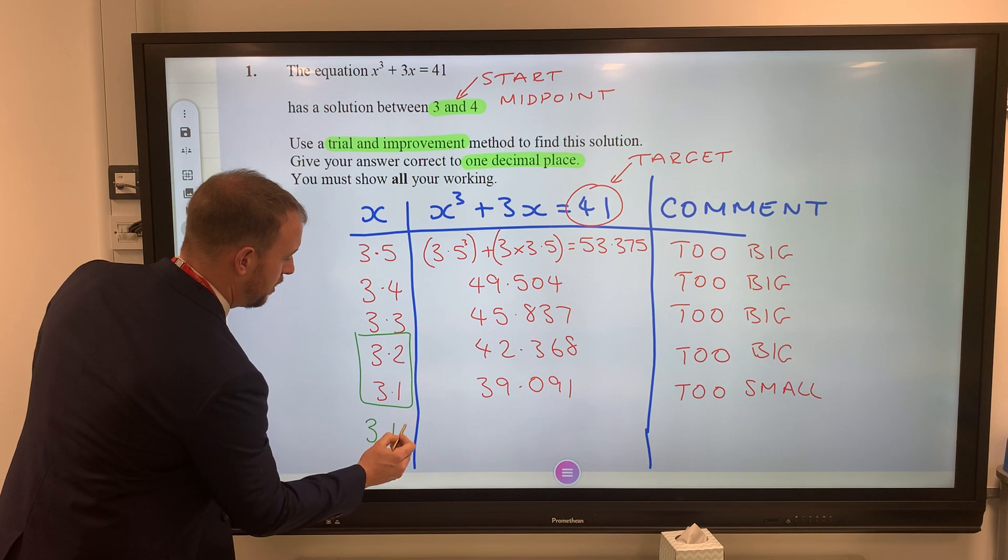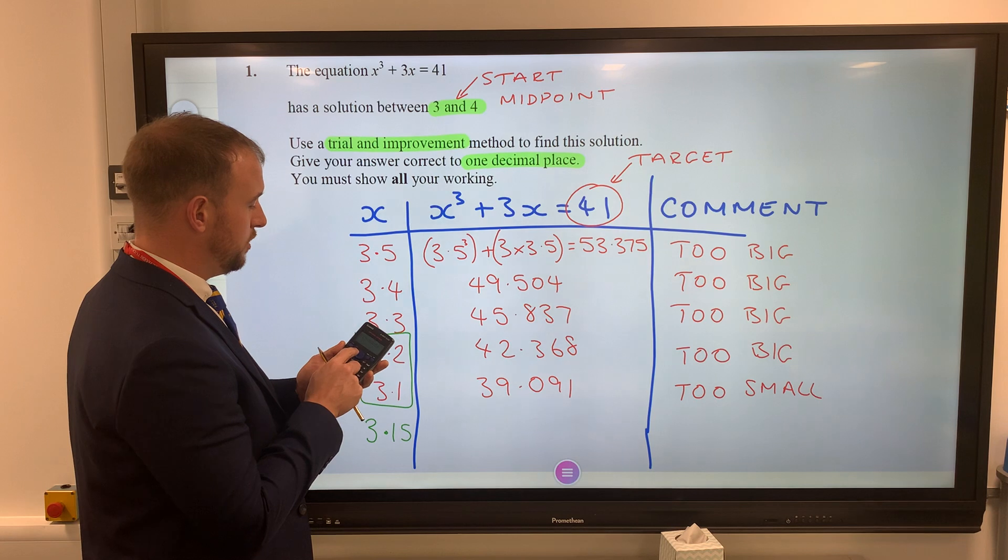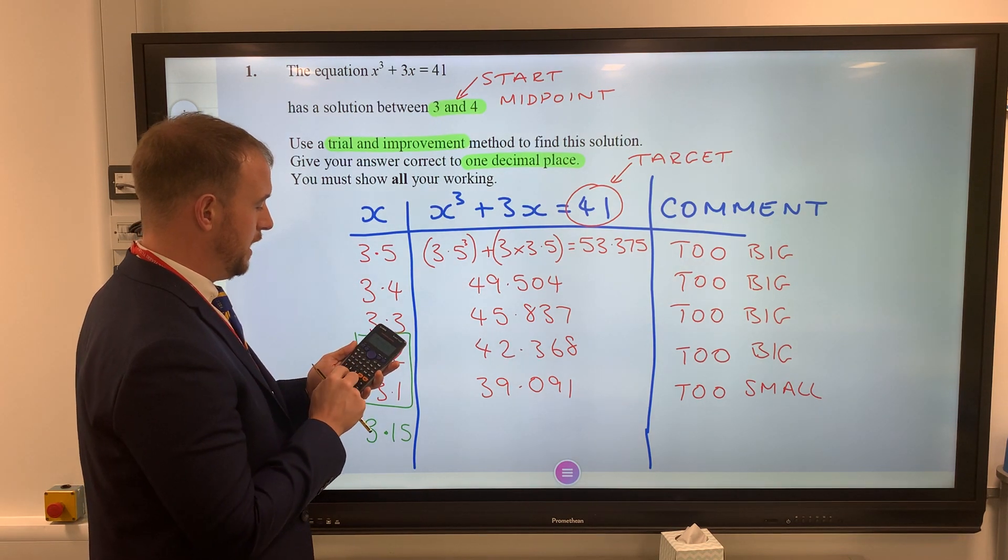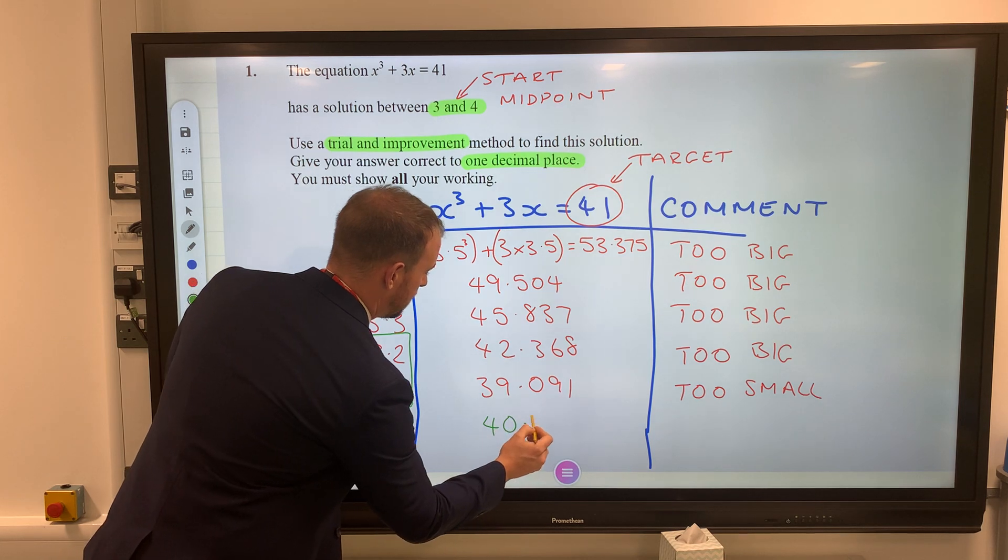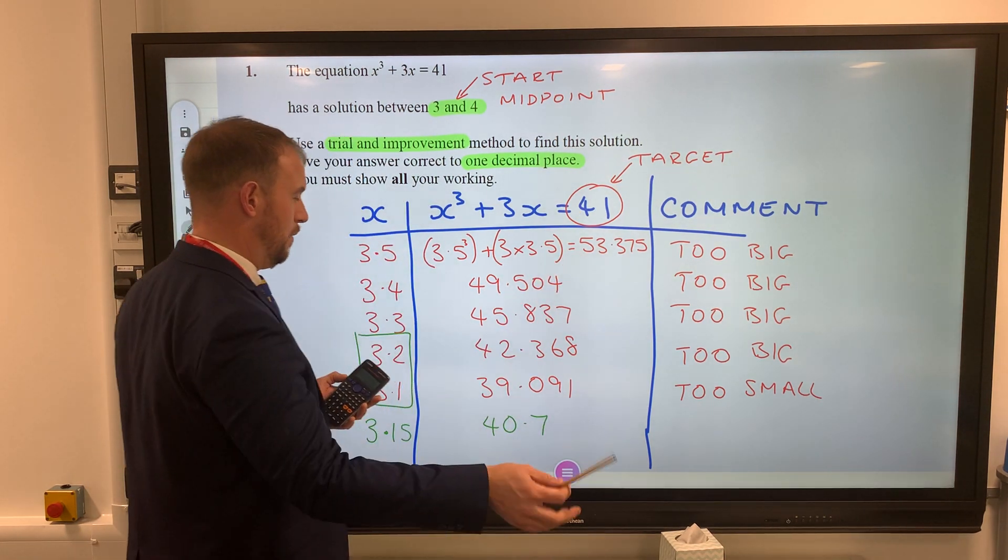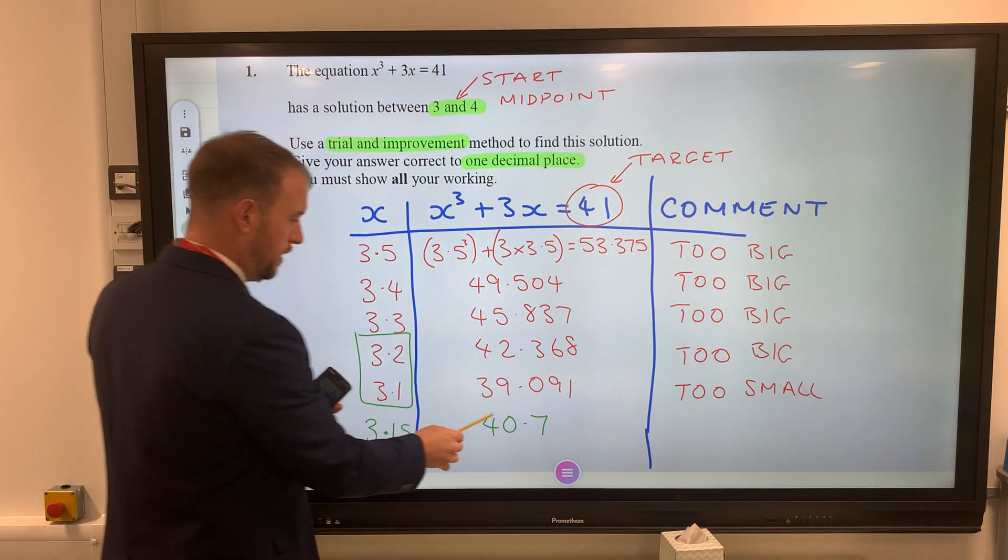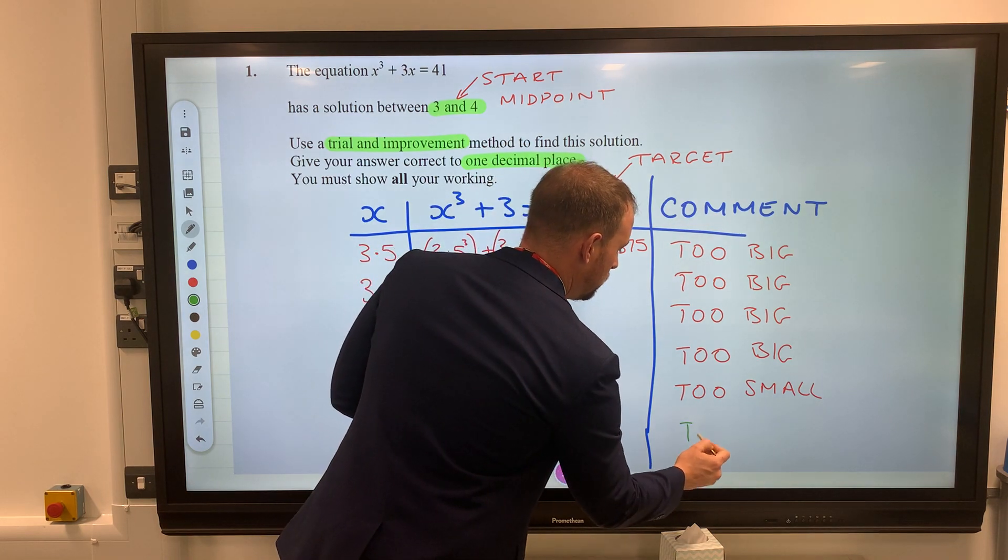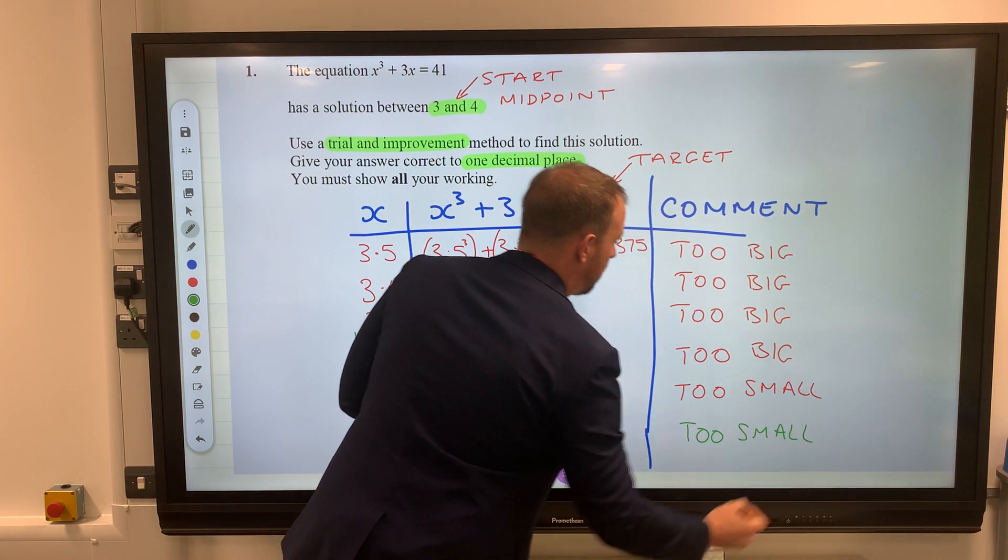Halfway between these is 3.15. I'm going to change the 3.1 for 3.15 to make 40.7. Now yes, that's a lot closer to 41. However, it's asked for one decimal place, so the answer is going to be one of these two. 40.7 is too small, even though it's very very close.